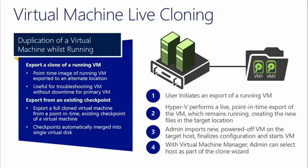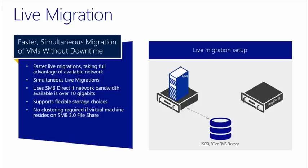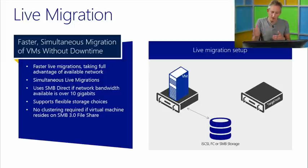For moving VMs around, live migration comes in. Live migration was introduced in Windows Server 2008 R2 Hyper-V — enabling moving a VM from physical host to physical host within a cluster with shared storage, but only one VM at a time between two nodes. In 2012 and 2012 R2, live migration is faster, taking full advantage of the networks between Hyper-V hosts. More importantly, it supports simultaneous live migration — if you've got a heavily loaded host and click maintenance mode, it evacuates all VMs simultaneously to multiple different cluster nodes.